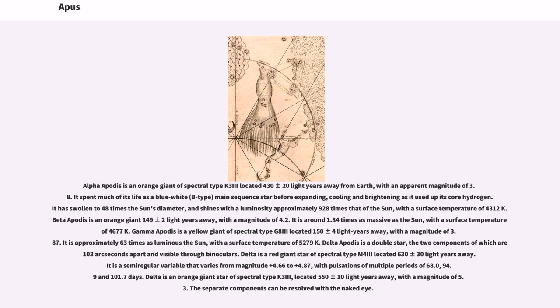Alpha Apodis is an orange giant of spectral type K5 III located 430 plus or minus 20 light-years away from Earth, with an apparent magnitude of 3.8. It spent much of its life as a blue-white, B-type, main-sequence star before expanding, cooling and brightening as it used up its core hydrogen. It has swollen to 48 times the Sun's diameter, and shines with a luminosity approximately 928 times that of the Sun, with a surface temperature of 4,312 K.